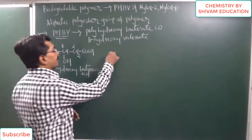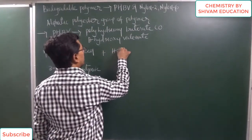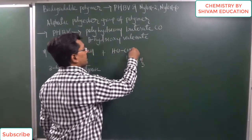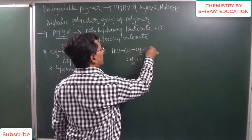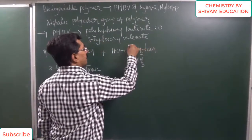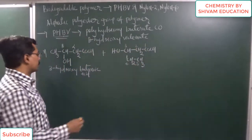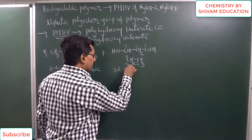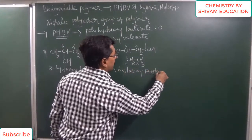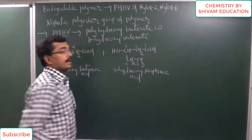The second monomer is 3-hydroxy pentanoic acid, which is also known as valeric acid. Its structure has CH2CH3, then CH2, then COOH — counting 1, 2, 3 — giving a total of 5 carbons. So it is 3-hydroxy pentanoic acid, also known as valeric acid.